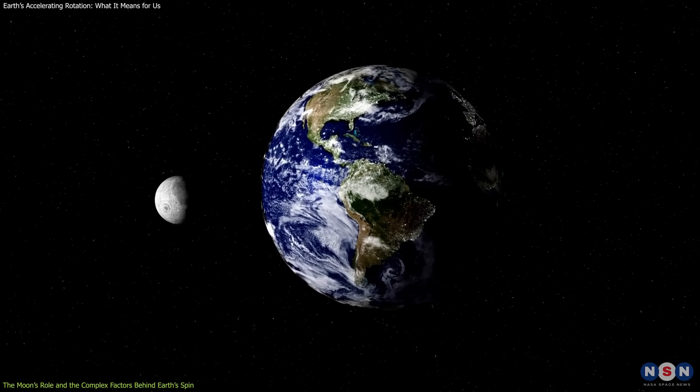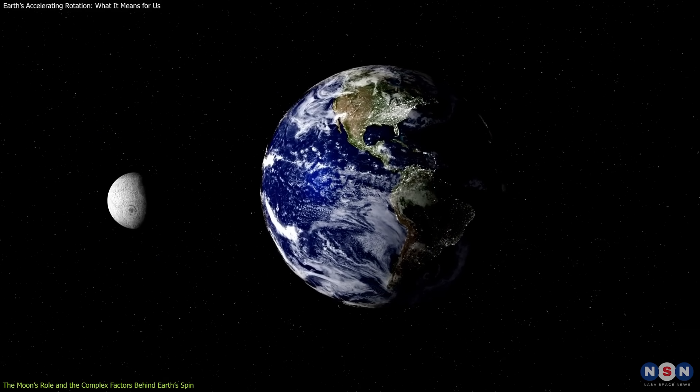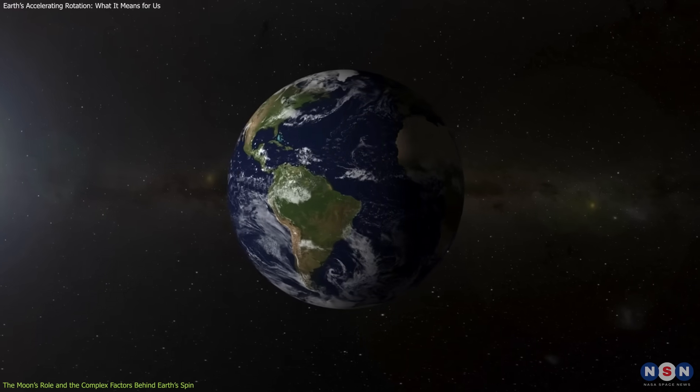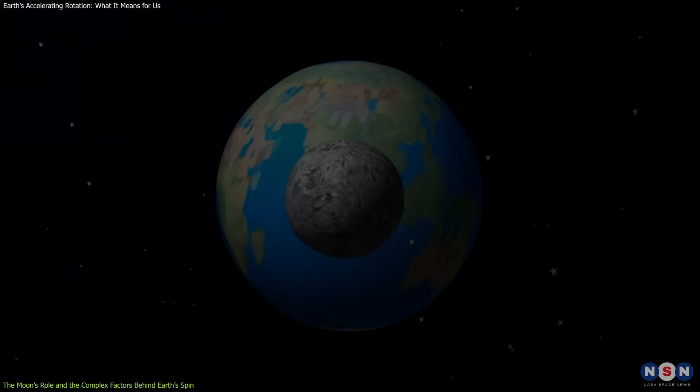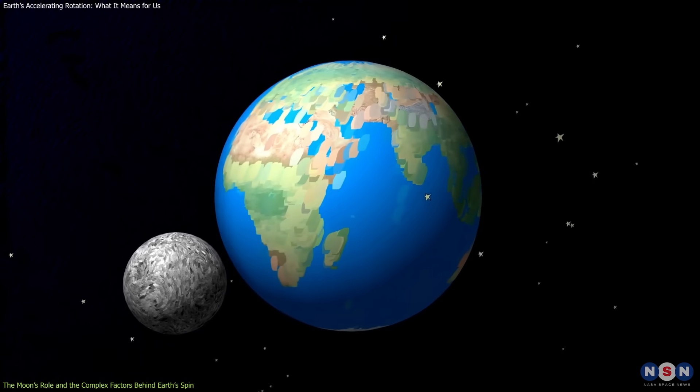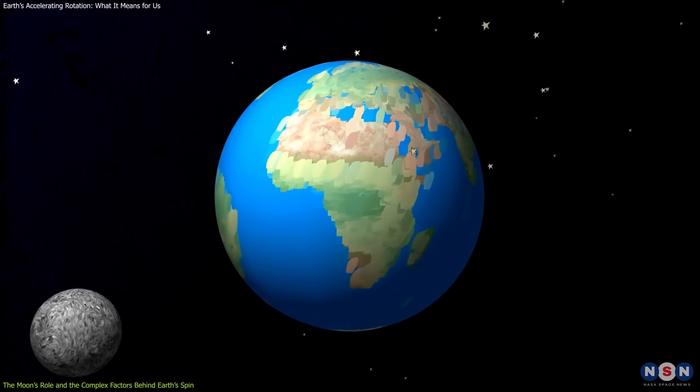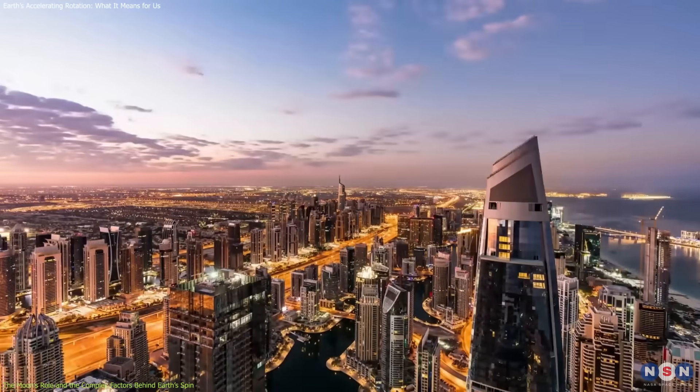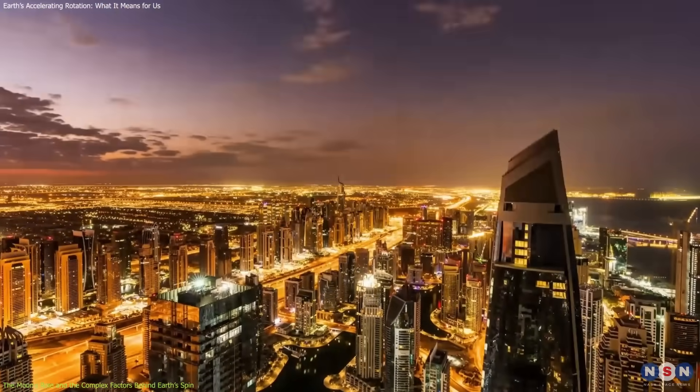Recent research suggests that this lunar cycle, along with other factors, is contributing to the acceleration of Earth's rotation. The change in the moon's position in its orbit has coincided with an increase in Earth's spin rate, and this could be the primary cause of the shortening days.